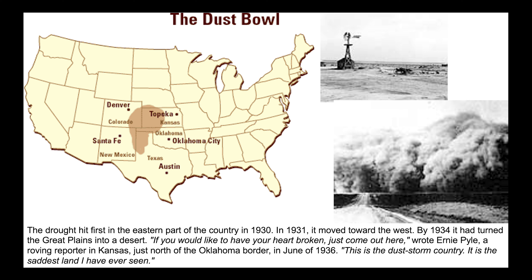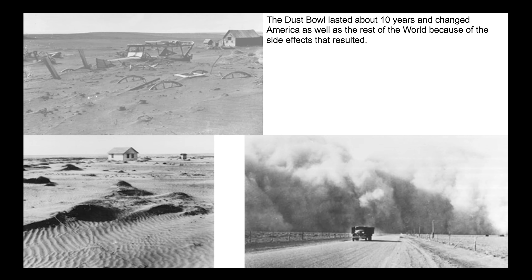Famous World War II battlefield reporter Ernie Pyle wrote, touring Kansas in June of 1936: 'If you would like to have your heart broken, just come out here. This is dust storm country. It's the saddest land I've ever seen.' Images from this period show farms devastated by the dust storms — the soil blew away, sometimes all the way into the Atlantic Ocean, but mostly back and forth over the great plains, burying farms after destroying the fields.